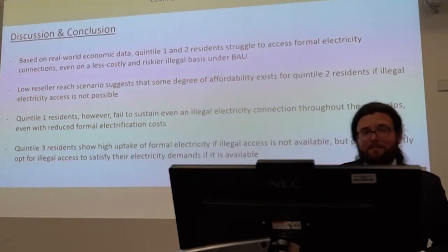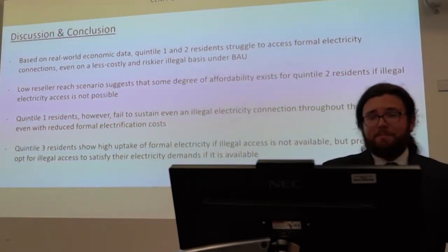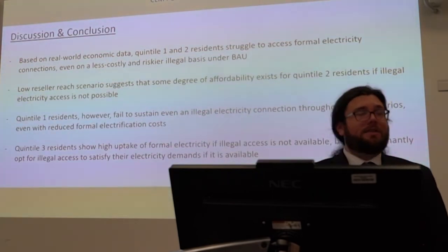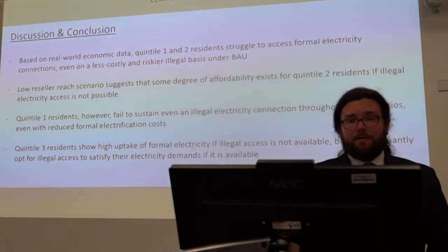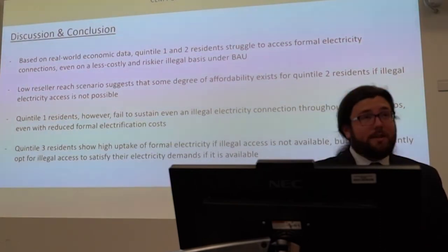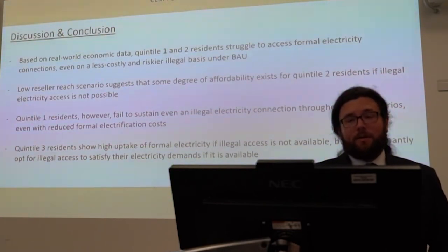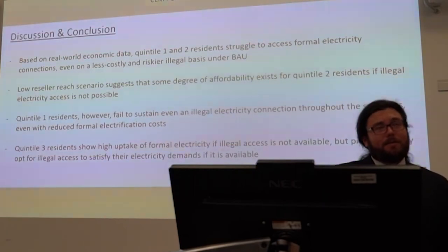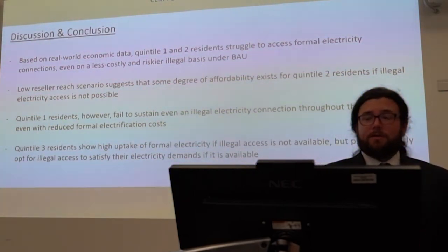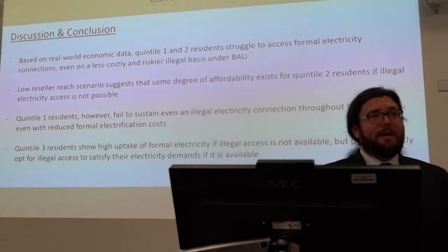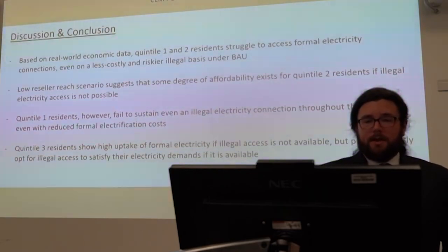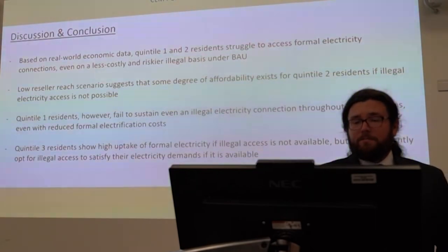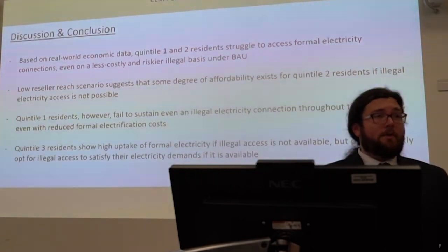So what does this all mean? Based on real-world economic data, Quintile 1 and 2 residents will still struggle to access formal electricity connections, even on a less costly illegal basis. The low reseller reach scenario suggests there is some affordability for Quintile 2 residents, but there's still an affordability gap for Quintile 1. Quintile 3 residents show high uptake of formal electricity if illegal access is not available, but predominantly illegal access still dominates for those residents.